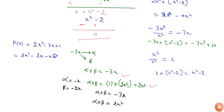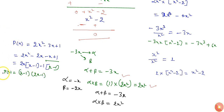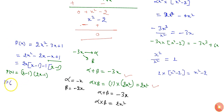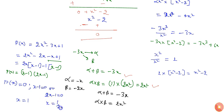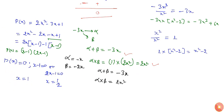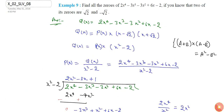So I can write p(x) as 2x² - 2x - x + 1, which factors as 2x(x - 1) minus 1(x - 1), giving p(x) = (x - 1)(2x - 1). Setting p(x) = 0, either x - 1 = 0 or 2x - 1 = 0, so x = 1 and x = 1/2 are the zeros of p(x), and hence also zeros of q(x).